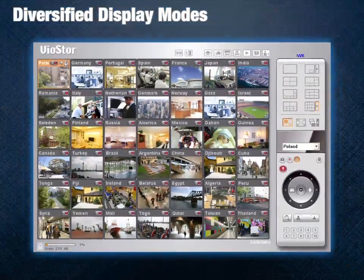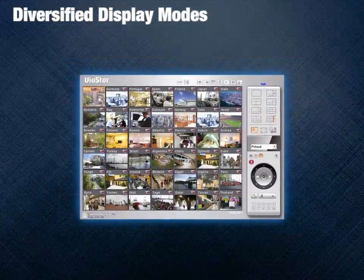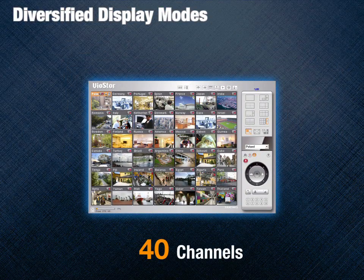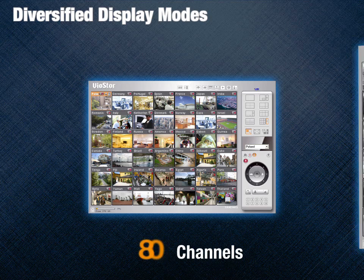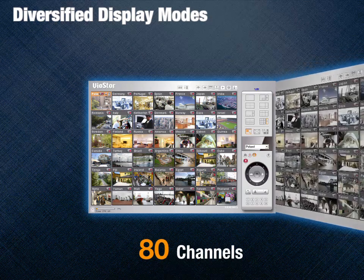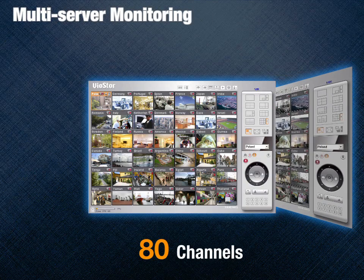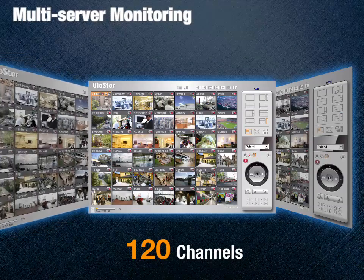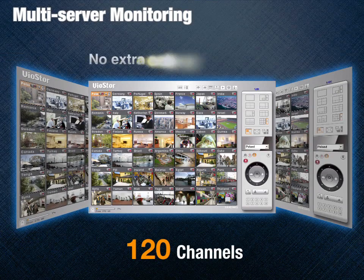The NVR supports diversified display modes, allowing simultaneous monitoring from up to 40 channels, and also dual-screen display. With a unique multi-server monitoring feature, users can monitor up to 120 IP cameras from multiple QNAP NVR servers.